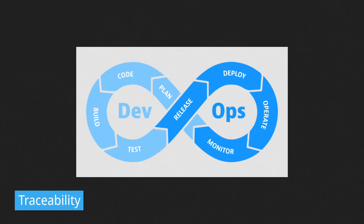Having a well-defined pipeline also helps provide traceability and accountability, as it allows organizations to track the progress of each and every stage of the development and deployment process. This helps identify any bottlenecks or issues that might be slowing down the pipeline cycle. Overall, a well-defined DevOps pipeline is really important for improving efficiency, quality, collaboration, and traceability, helping any organization deliver value to customers more quickly and efficiently.